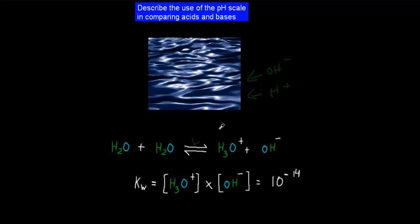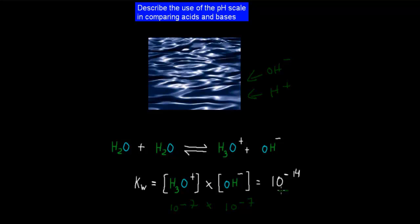So Le Chatelier's principle applies to this equation. We also mentioned the water constant, which was Kw. The water constant is a way that we can figure out the concentration of hydroxide ions and hydronium ions in any solution. For pure water, the constant is 10^-7 for hydronium and 10^-7 for hydroxide ions. Multiplying those together gives us 10^-14.